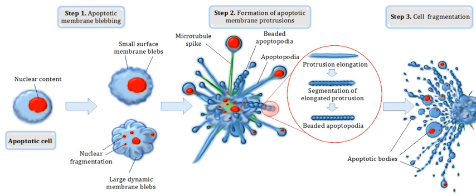DNA fragmentation can occur under certain conditions in a few different cell types. This can lead to problems for a cell, or it may lead to a cell receiving a signal to undergo apoptosis. Below are a couple of examples of irregular fragmentation that can occur in cells.